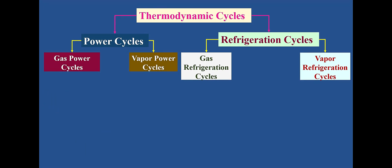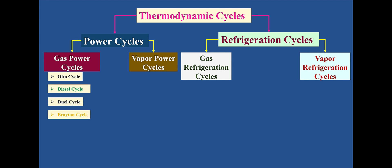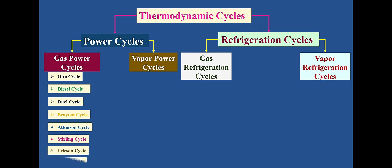Gas power cycles are further classified as Otto cycle, Diesel cycle, Dual cycle, Brayton cycle, Atkinson cycle, Stirling cycle, Ericsson cycle, and Lenoir cycle.